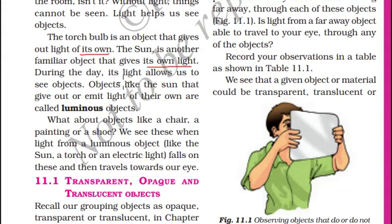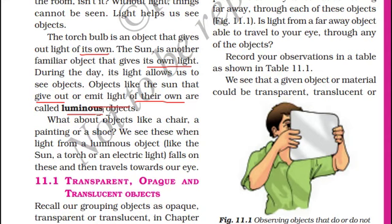During the day, its light allows us to see the objects. Objects like the Sun that give out or emit light of their own are called luminous objects. The Sun and other stars are luminous objects, whereas planets and natural satellites like our Moon are non-luminous objects.